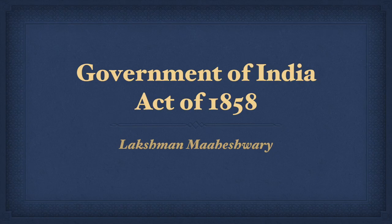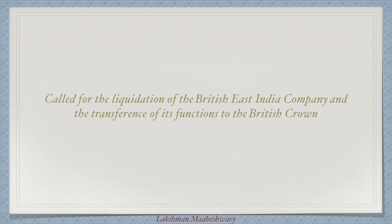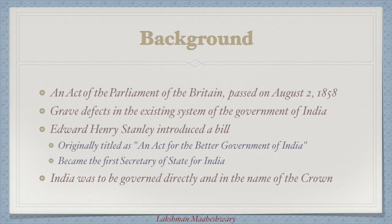Hello, I am Lakshman Maheshwari and today we will talk about the Government of India Act of 1858. It called for the liquidation of the British East India Company and the transfer of its function to the British Crown. It was an Act of the Parliament of Britain passed on August 2nd, 1858.